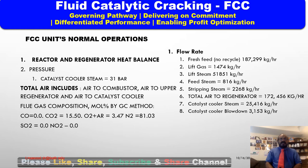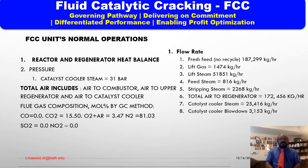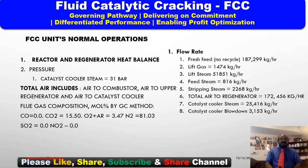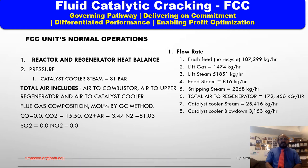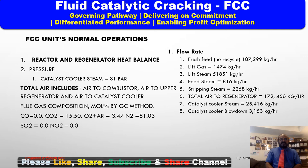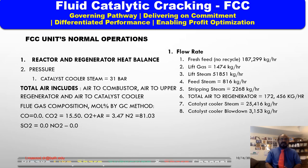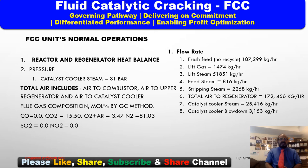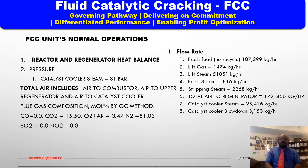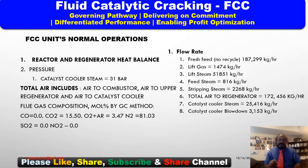Process conditions — pressure and flow. Catalyst cooler steam pressure must be maintained at 31 bar. Flows: fresh feed plus recycle 187,000 kg per hour, lift gas 1,474 kg per hour, lift steam 5,851 kg per hour, feed steam 816 kg per hour, stripping steam 2,268 kg per hour, total air to regenerator 172,000 kg per hour, catalyst cooler steam 25,000 kg per hour, catalyst cooler blowdown 3,153 kg per hour. Total air includes air to combustor, air to upper regenerator, and air to catalyst cooler.